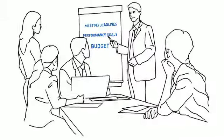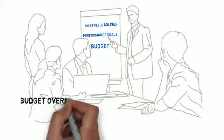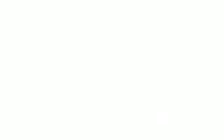It's widely known that budget overruns of 30% or more are common and missed deadlines plague industries ranging from aerospace to telecommunications.